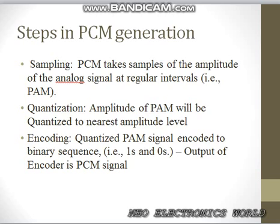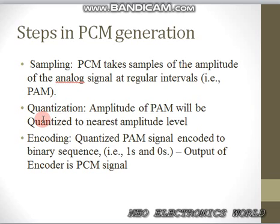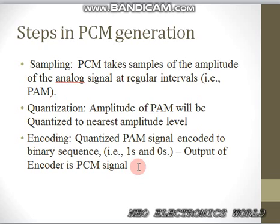Let's have a look at the steps in PCM. The first step: the analog signal is passed through the sampler. PCM takes samples of the amplitude of the analog signal at regular intervals — that is PAM. We get a pulse amplitude modulated signal after sampling. Then we pass that through a quantizer; the amplitude of the PAM signal is quantized to the nearest amplitude level. Then we encode the signal — ones and zeros are produced. The quantized PAM signal is encoded to a binary sequence. The output of the encoder will be a pulse code modulated signal.